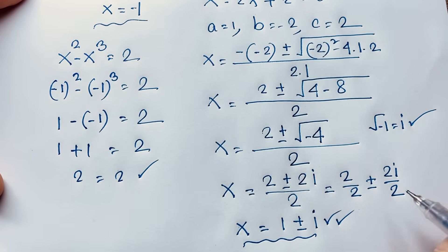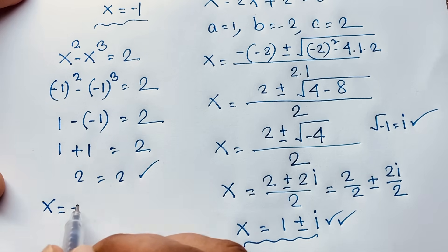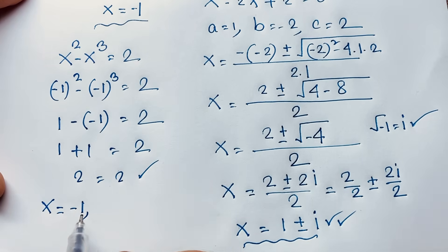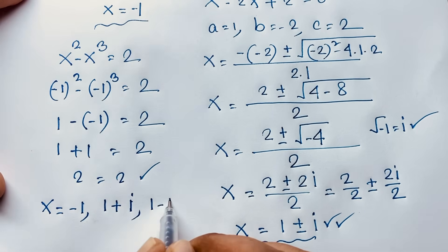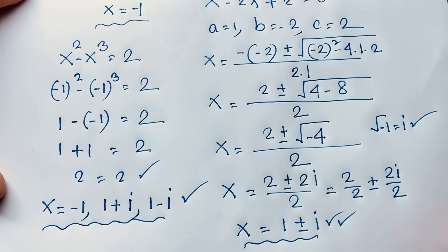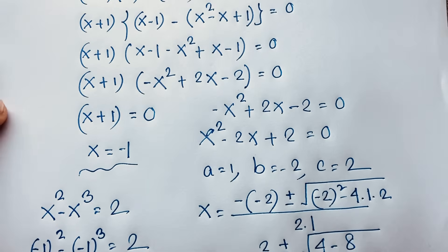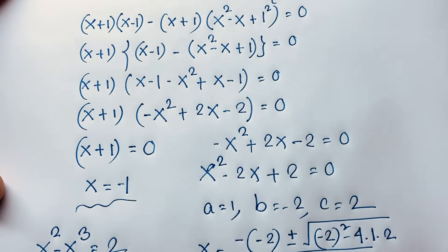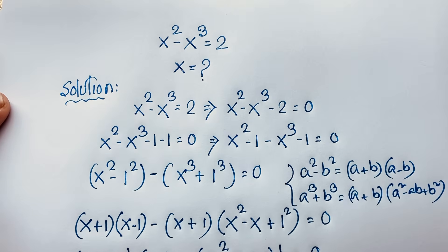So we have found our final solution: x equals minus 1, x equals 1 plus i, and x equals 1 minus i. These are our 3 solutions to this cubic equation. Thank you all. If you enjoyed this math Olympics question, please subscribe to my channel for other interesting videos. Goodbye, take care.